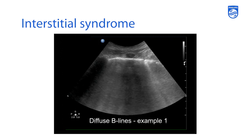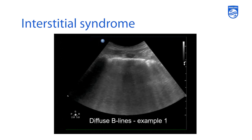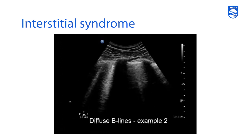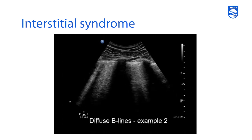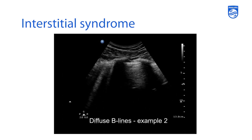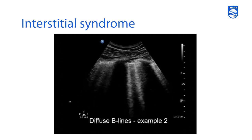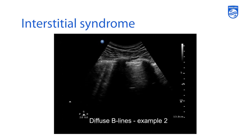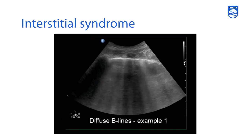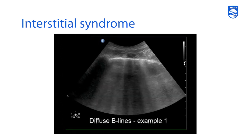This is an example of what B-lines look like in a patient with pulmonary edema. They're diffuse. They're usually bilateral. Across the entire field, there's no real sparing of areas within the lung where you're seeing B-lines versus not seeing B-lines.